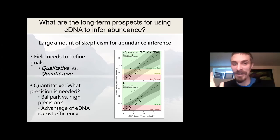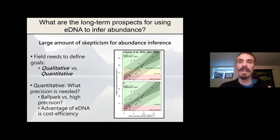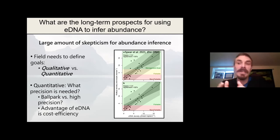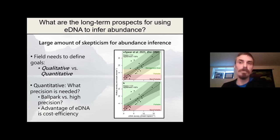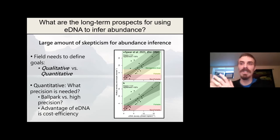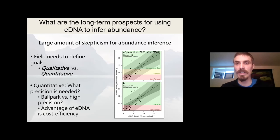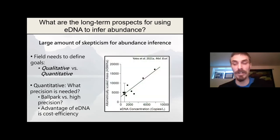The field needs to define goals: qualitative versus quantitative. When I talk about qualitative goals, I really mean looking at things from the framework of trying to estimate whether a population is high, medium, or low abundance, or alternatively whether or not a population is above a critical conservation threshold. So eDNA might be able to tell you whether a population is critically low, or that we can be reasonably confident it's within safe conservation levels. In terms of quantitative prediction, what I mean is whether or not we can actually use eDNA to predict the number of fish present in a population.